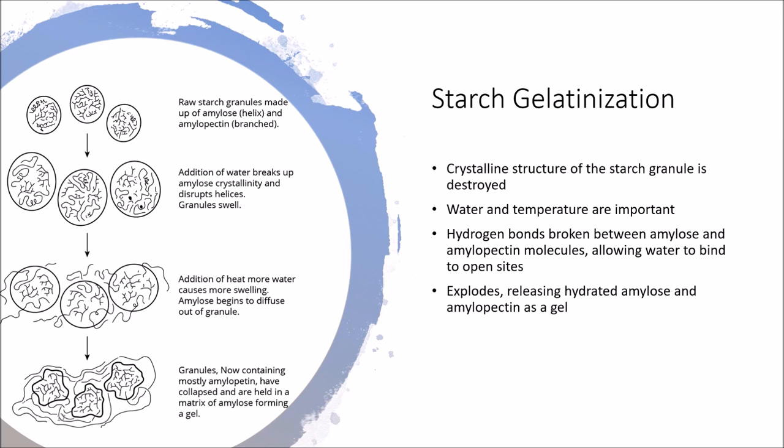As water replaces those hydrogen bonds, the molecules expand and grow further apart. When temperature reaches a certain point, the starch granule releases mostly amylose and essentially explodes. The amylose and amylopectin released from the granules are hydrated, releasing as a gel-like paste which, as the bread continues to cook, firms up and helps form the bread structure.